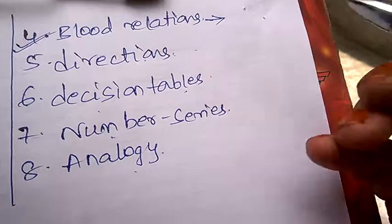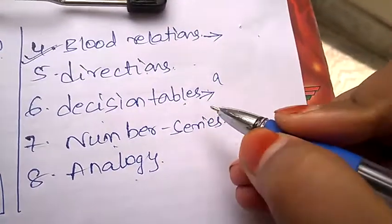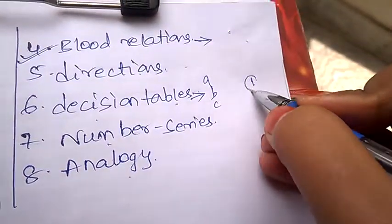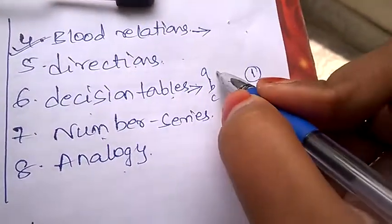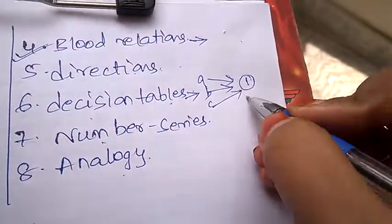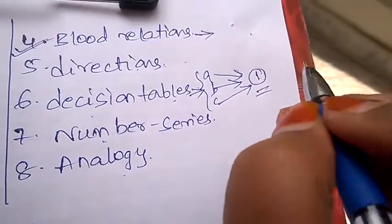Decision tables: if there are three persons available and there is only one job role available, which person can be selected as the best suitable person for this job role based on their qualifications? This sort of decision you need to take under decision table problems.